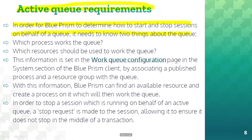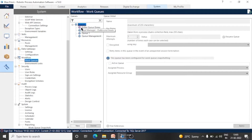Let's go through the active queue requirements. In order for Blue Prism to determine how to start and stop sessions on behalf of a queue, Blue Prism needs to know two things about the work queue: which process works the queue — so we assign a process to the queue — and which resource should be used to work the queue. As we assign the process and resource, if this queue is an active queue, the logo of the work queue will become purple in color, otherwise it will remain blue.